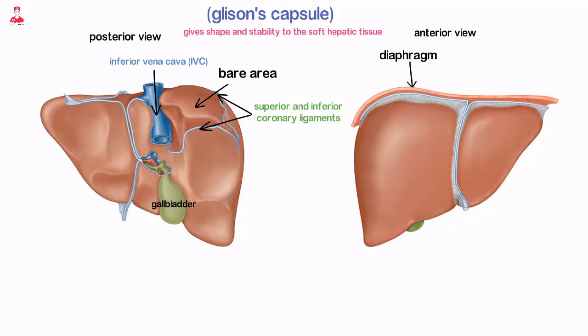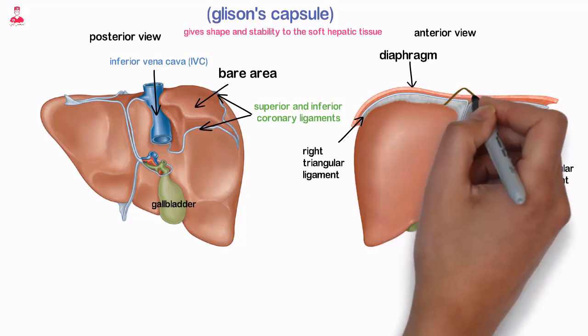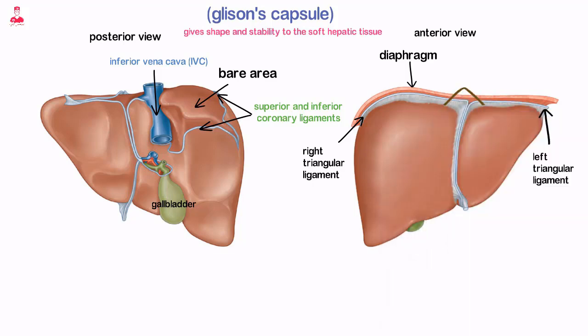The liver is attached to the diaphragm via the right and left triangular ligaments, which are extensions of the coronary ligaments.